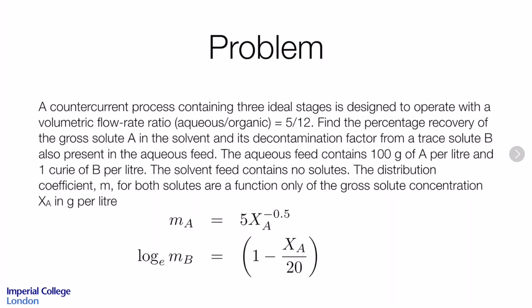This is our problem statement. We have a counter-current process with three ideal stages, designed to operate with a volumetric flow rate ratio of aqueous to organic equal to 5 over 12. We're asked to find the percentage recovery of the gross solute A in the solvent and its decontamination factor from a trace solute B, which is also present in the aqueous feed.